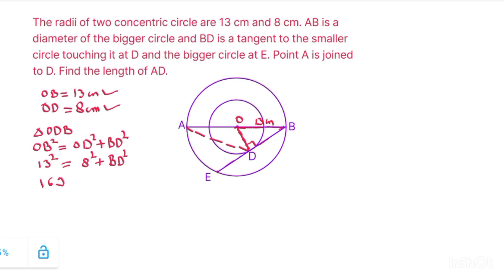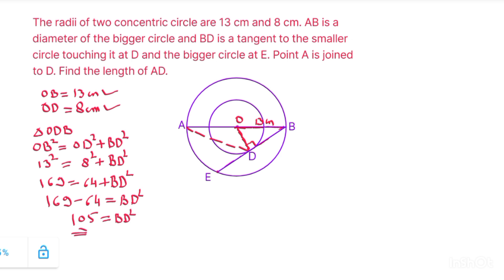Substituting the values: 169 equals 64 plus BD squared, so 169 minus 64 equals BD squared, giving 105 equals BD squared. This implies BD is equal to square root of 105. So this length is now square root of 105.